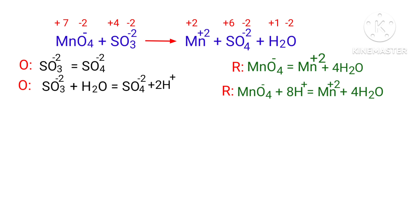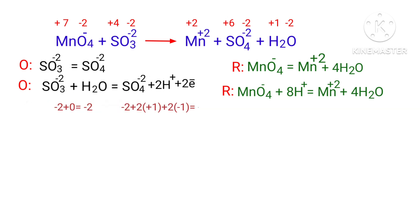For a redox reaction, the total charge must be equal on both sides. In the oxidation half-reaction, both sides are not equal. To make them equal, add electrons — you cannot add protons. Adding 2 electrons to the right side makes it equal to −2, balancing the charges in the oxidation half-reaction.